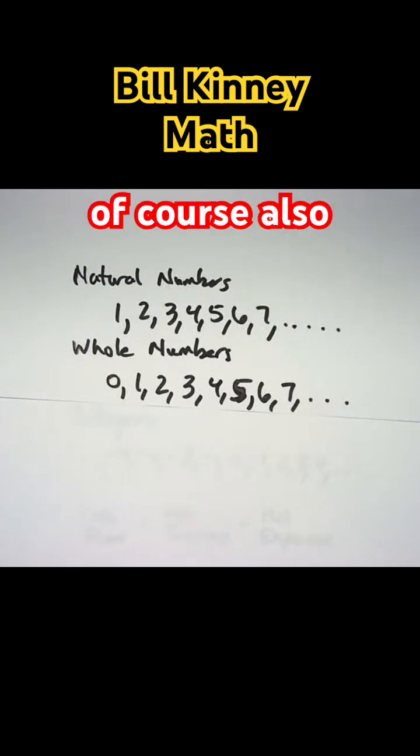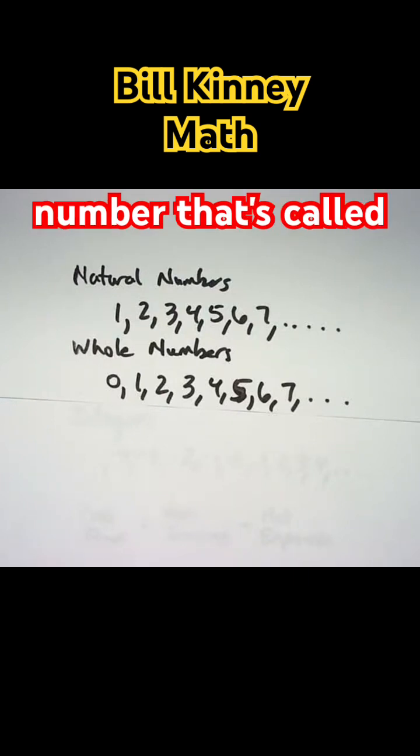One basic thing to note here is that if you add two natural numbers, you get another natural number. That's called closure.